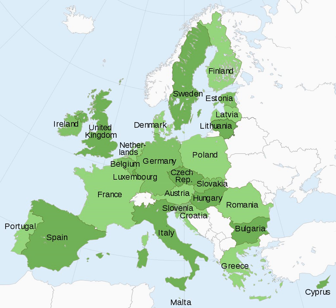Very early on in the history of the EU, the unique state of its establishment and pooling of sovereignty was emphasized by the Court of Justice. By creating a community of unlimited duration, having its own institutions, its own personality, its own legal capacity and capacity of representation on the international plane, and more particularly, real powers stemming from a limitation of sovereignty or a transfer of powers from the states to the community, the member states have limited their sovereign rights and have thus created a body of law which binds both their nationals and themselves.